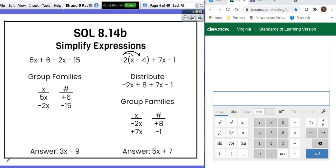So let's look at this first one, 5x plus 6 minus 2x minus 15. The first thing we do is look at it and say, okay, there's no equal sign, so we're not solving, we just have to put together our families.